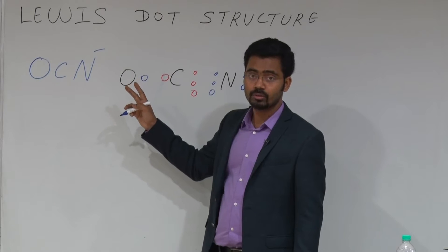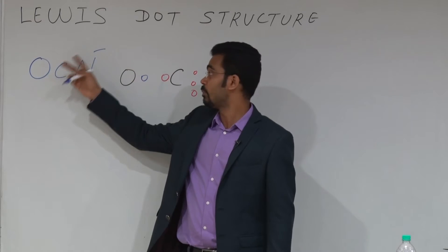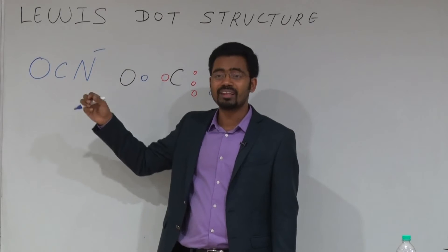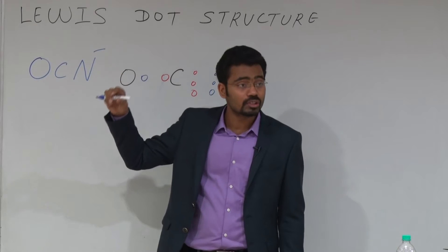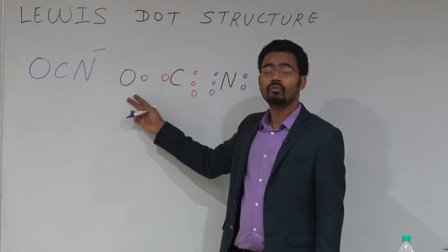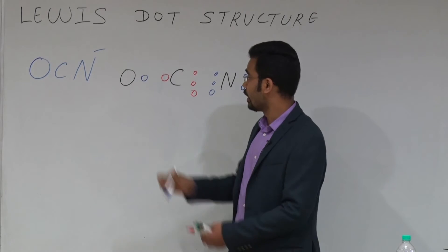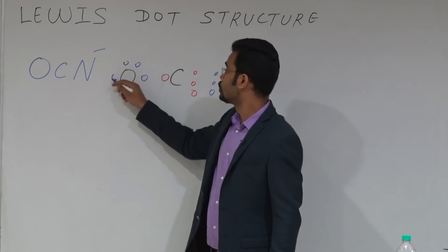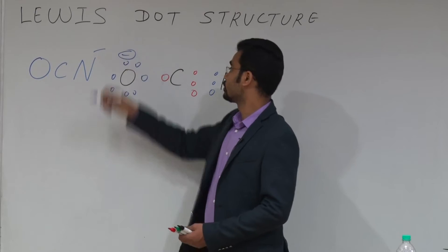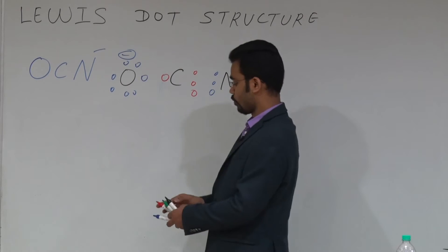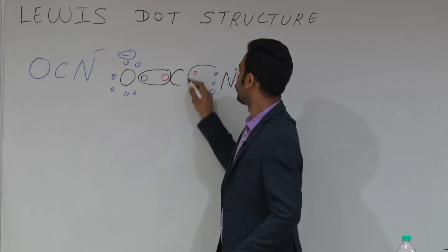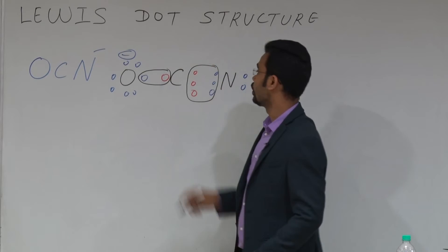Oxygen has six electrons in reality, but because of the minus charge there is a gain of one electron. Assuming that electron is on oxygen, oxygen has seven electrons. One electron forms a bond, therefore oxygen has three lone pairs and also one negative charge. So the bond formation gives one bond here and three bonds here.